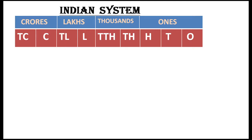In the ones period there are three places, in the thousands period two places, in the lakh period two places, and in the crore period also two places.